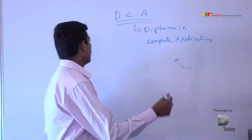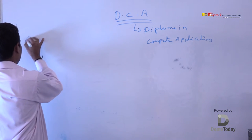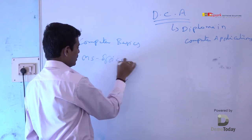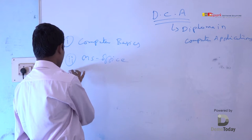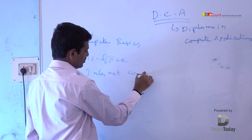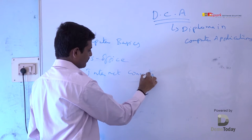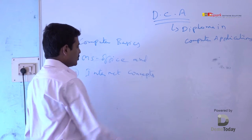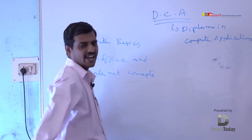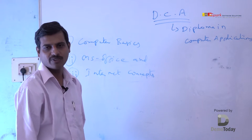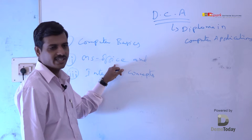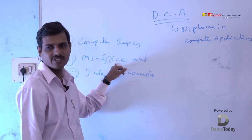These are the modules that are going to be covered: computer basics, MS Office, and internet concepts. These are the three modules which come under DCA. It is called Diploma in Computer Applications because the basic computer application is MS Office.